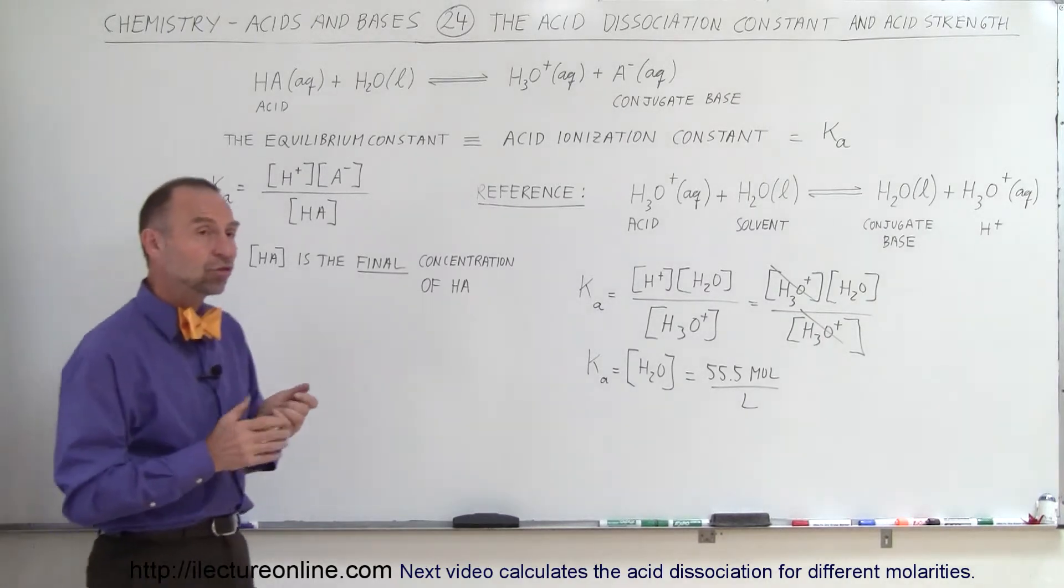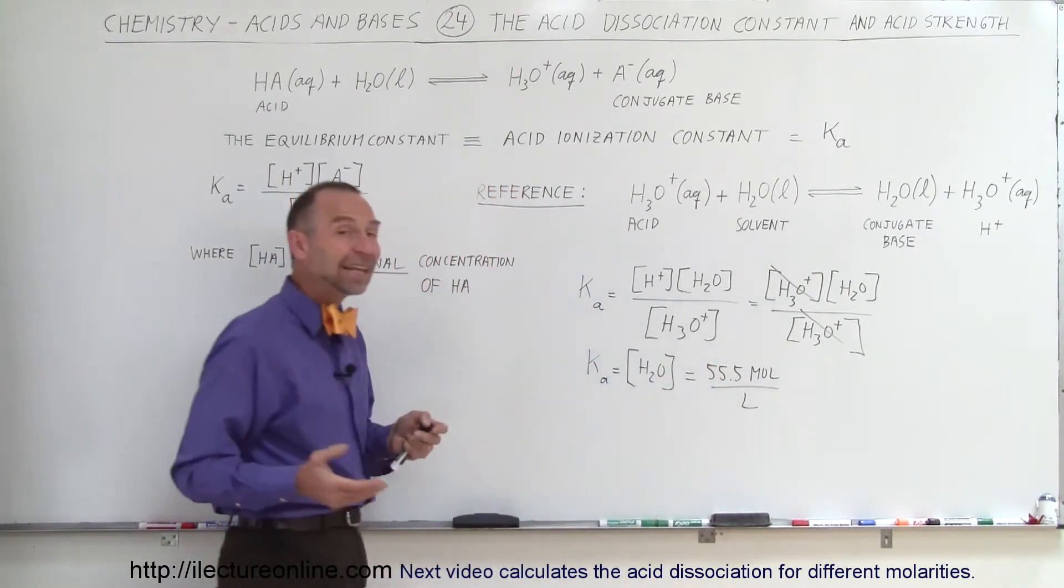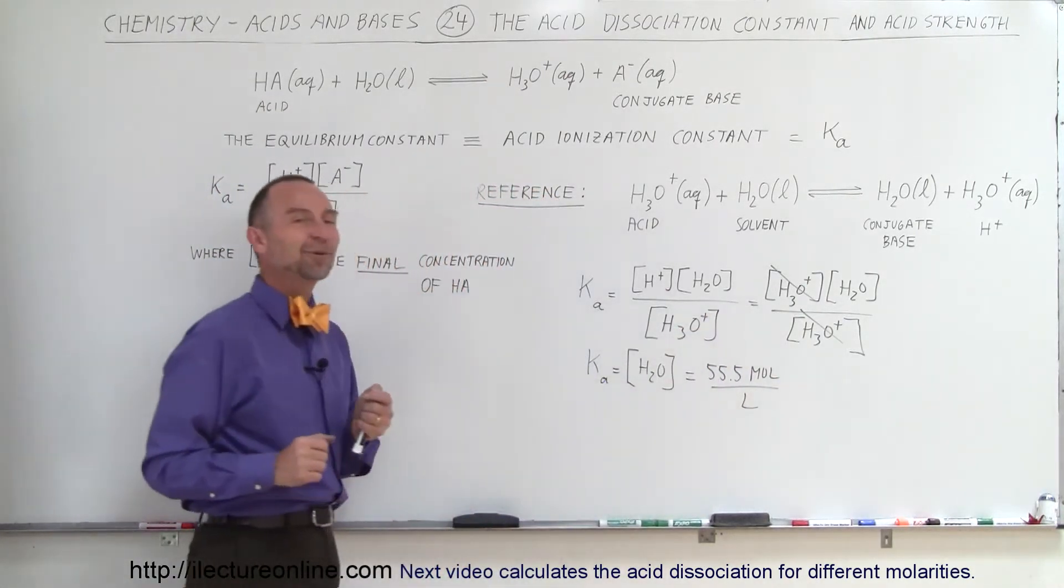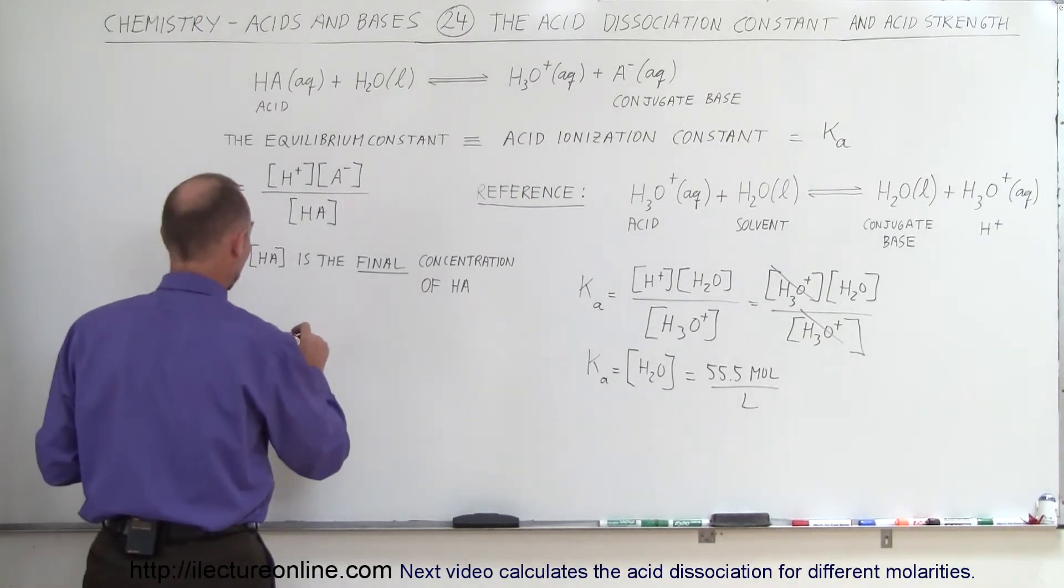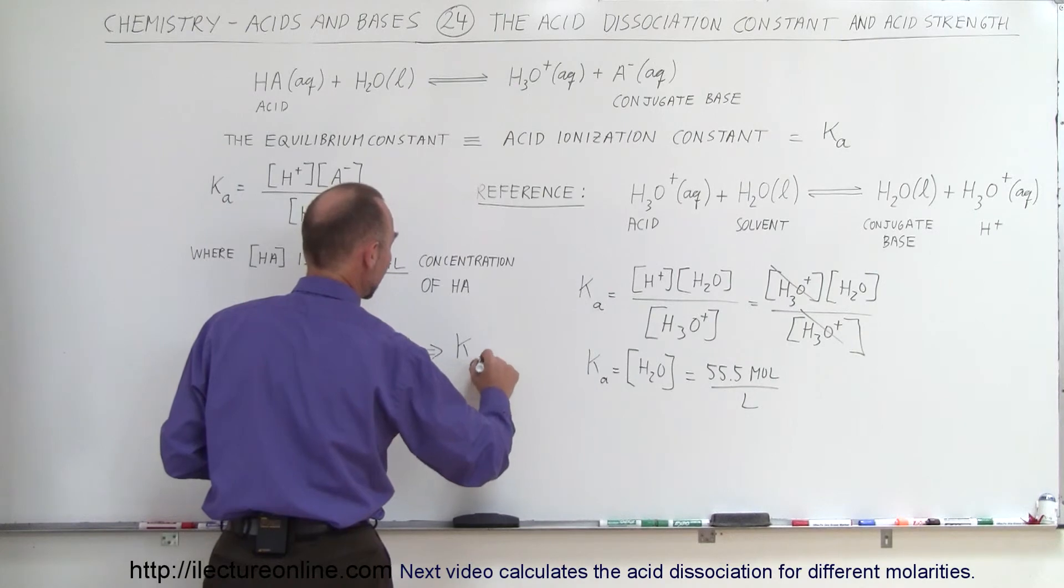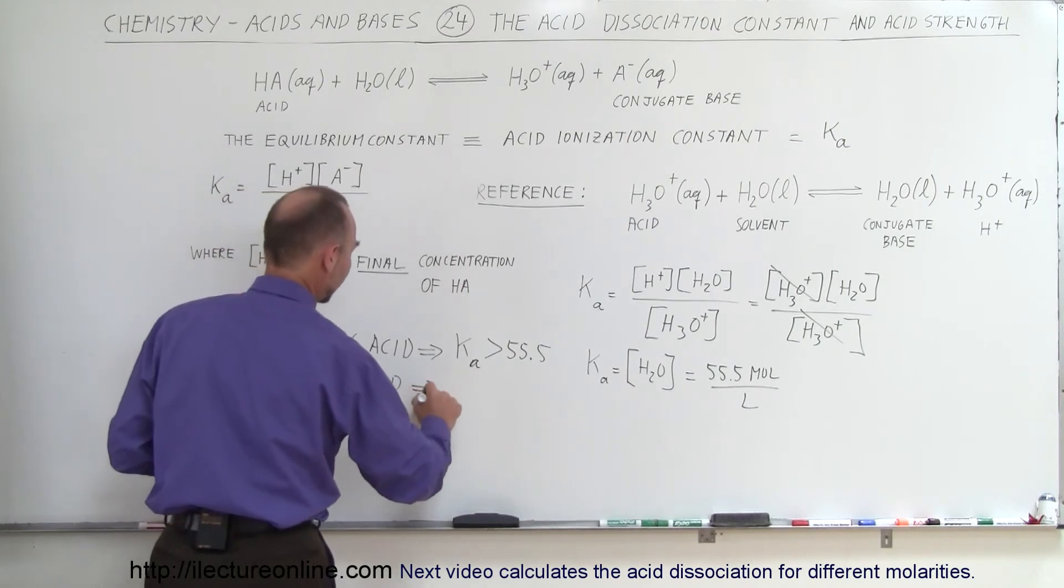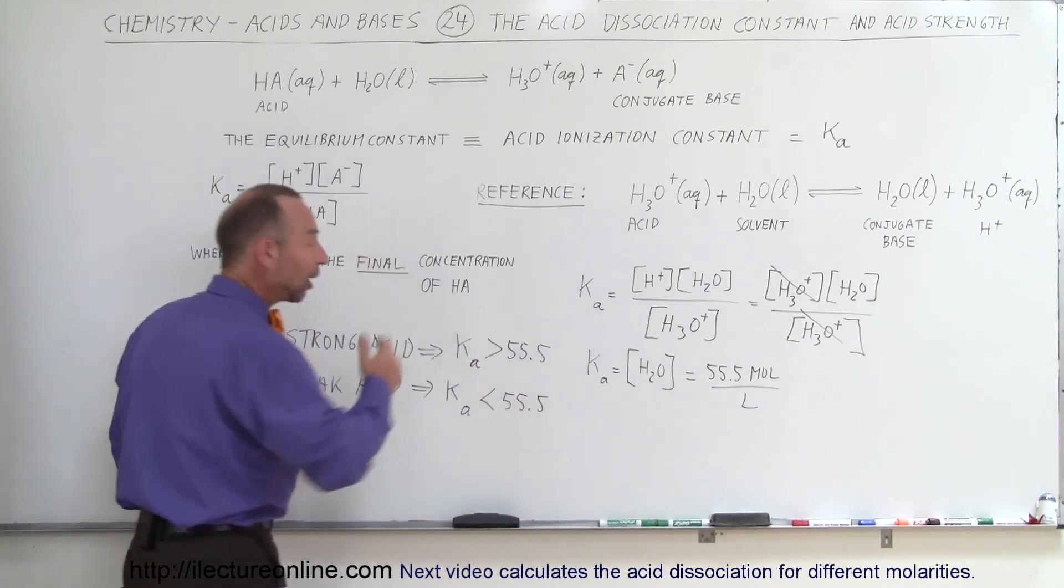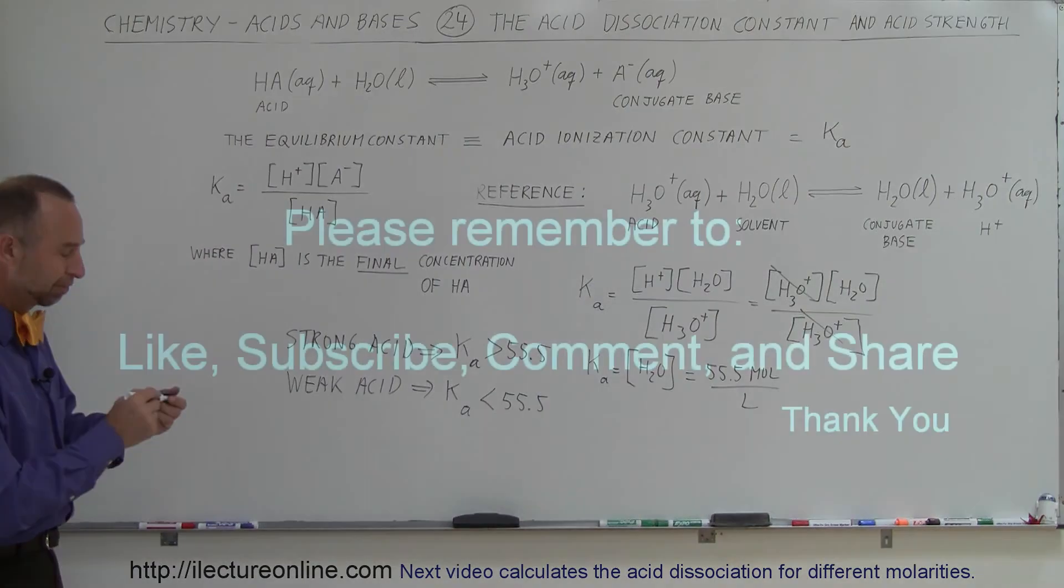Which means that any acid which is stronger than that would have a dissociation constant larger than 55.5, and any weak acid would have a dissociation constant smaller than 55.5 moles per liter, and that's kind of the dividing line between strong acids and weak acids. So let's write that, so a strong acid will have a Ka greater than 55.5, and a weak acid will therefore have an acid dissociation constant that is smaller than 55.5, and that's another way to delineate between a strong acid and a weak acid.